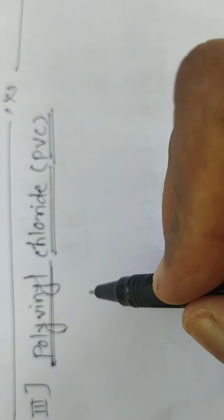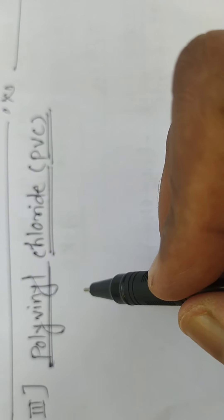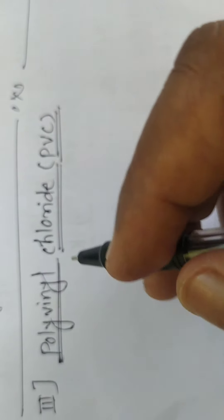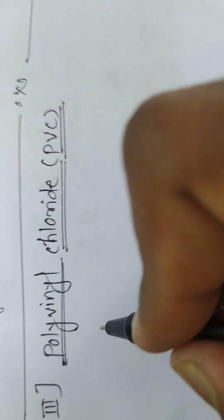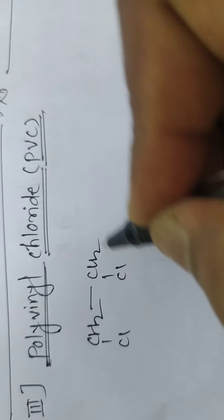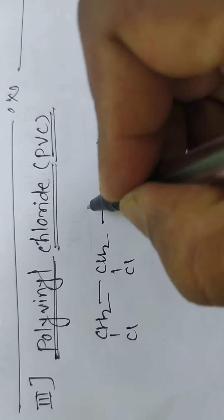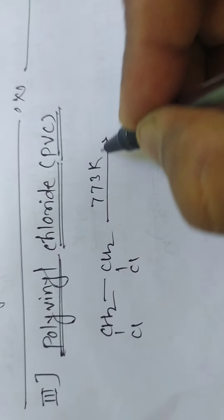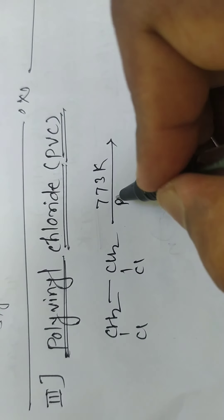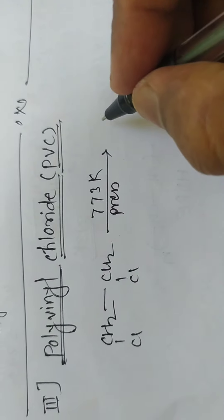Here vinyl chlorides are prepared by cracking of ethylene dichloride. We have CH2Cl-CH2Cl, and when it is cracked at very high temperature and pressure, we can obtain the product.